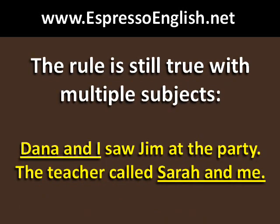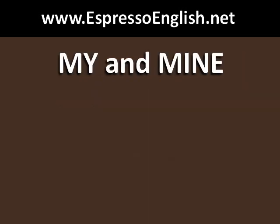This rule is still true with multiple subjects. For example, Dana and I saw Jim at the party — Dana and I is the subject. It would be incorrect to say Dana and me. The teacher called Sarah and me — Sarah and me is the object. It would be incorrect to say Sarah and I.